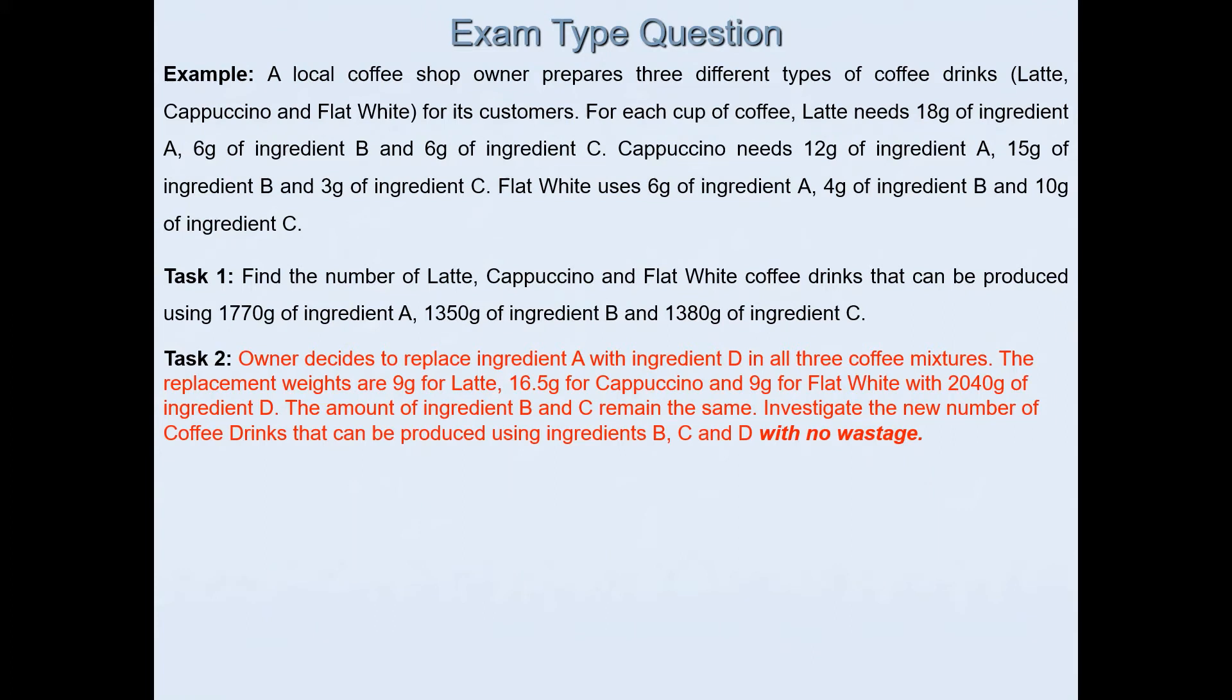The owner decides to replace ingredient A with ingredient D in all three coffee mixtures. The replacement weights are 9 grams for latte, 16.5 grams for cappuccino, and 9 grams for flat white with 2,040 grams of ingredient D. The amount of ingredient B and C remain the same. Investigate the new number of coffee drinks that can be produced using ingredients B, C, and D without any wastage.